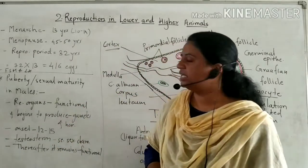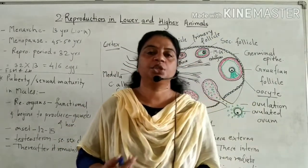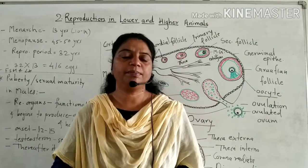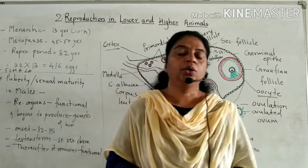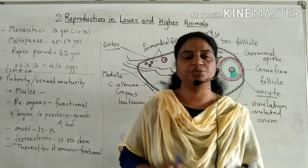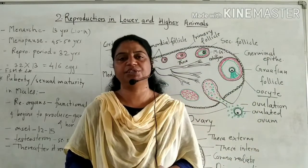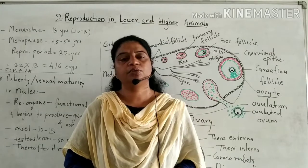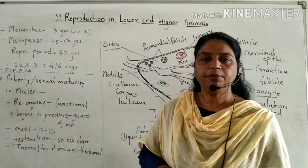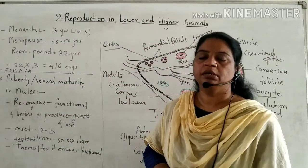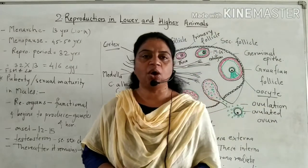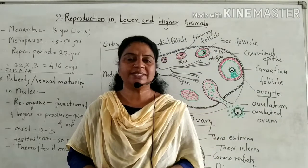Then we will see the structure of the ovary. In the last lecture, we saw the development of the ovary. The ovary is the primary sex organ, situated in the pelvic region. Its function is to produce ova as well as hormones. In the female ovary, cyclic changes occur in the menstrual cycle.